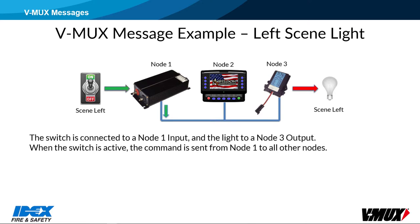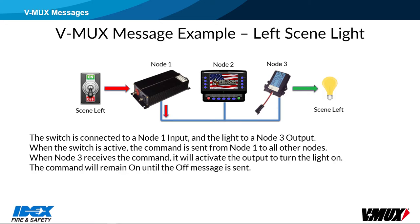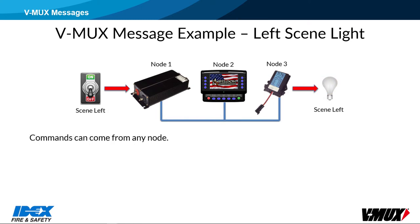When the switch is turned on, node 1 will send command number 170 onto the network with an on status. This message is sent only one time. All other nodes will receive the command and register the command as on. Any node that uses that command will respond accordingly. Node number 3 will activate the output to turn on the scene left light. The command state will remain on until that same command is sent again with an off status. It is important to note that a command can be sent from any node in the network. All nodes react to the last command message that was sent, regardless of its origin.